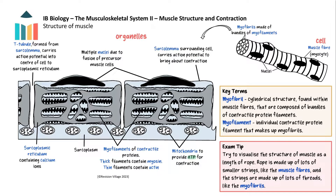The sarcolemma folds inwards towards the centre of the cell forming transverse or T-tubules. These are important in making sure the action potential reaches the sarcoplasmic reticulum. The sarcoplasmic reticulum is a specialised form of endoplasmic reticulum and it stores and releases calcium ions required for muscle contraction. Myofibrils, which run the length of the muscle fibre, are composed of myofilaments, the contractile proteins involved in generating force.